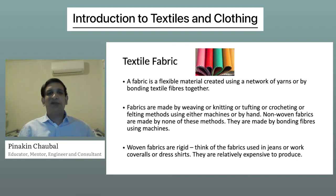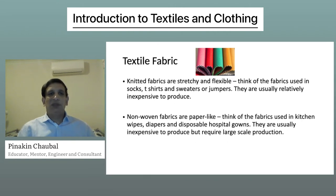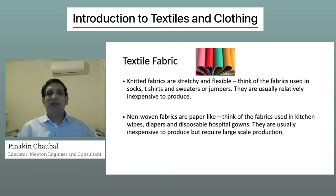Woven fabrics are rigid. Think of the fabrics used in jeans, work coveralls, or dress shirts. They are relatively expensive to produce. Knitted fabrics are stretchy and flexible — think of the fabrics used in socks, t-shirts and sweaters or jumpers. They are usually relatively inexpensive to produce.